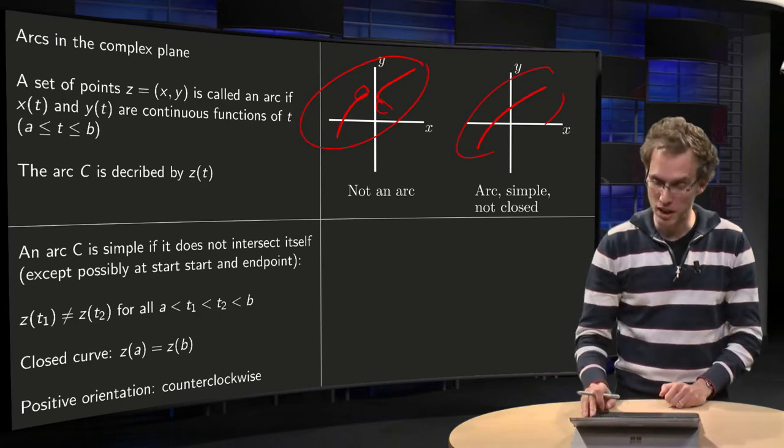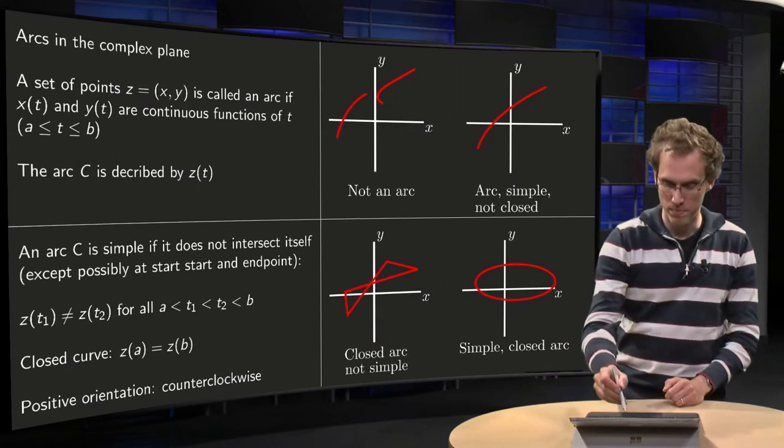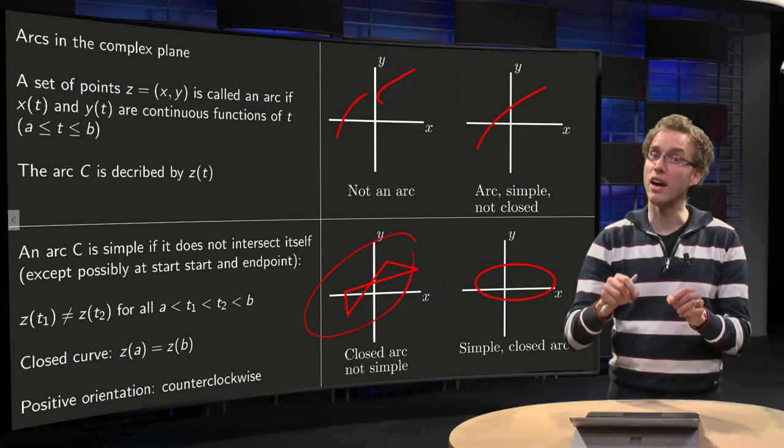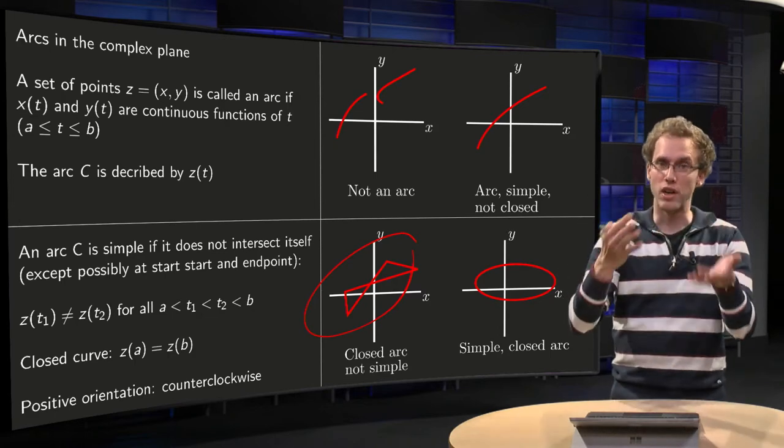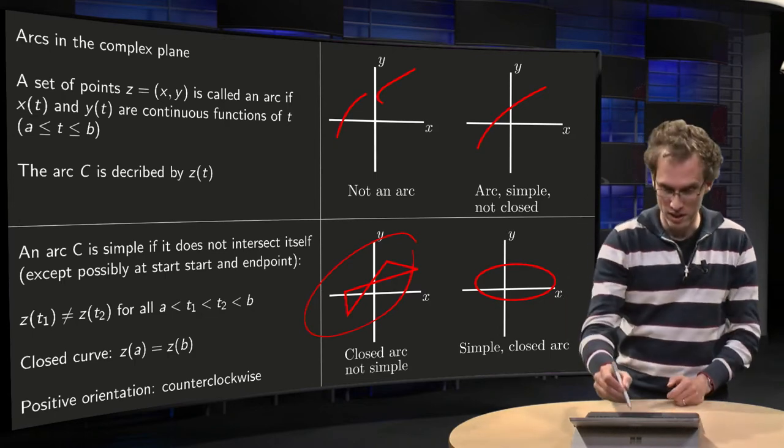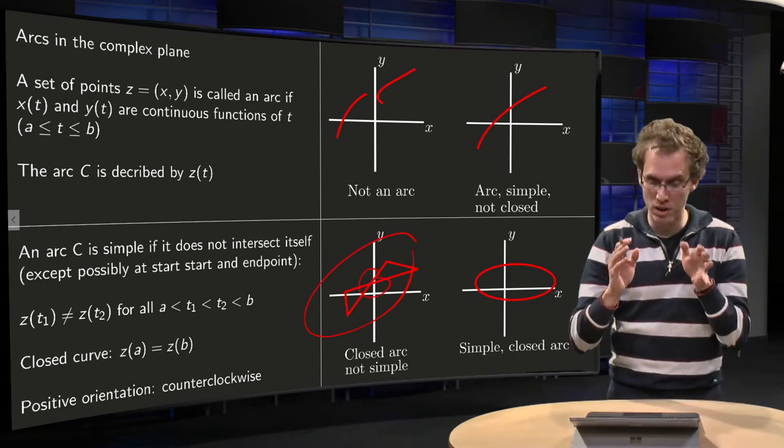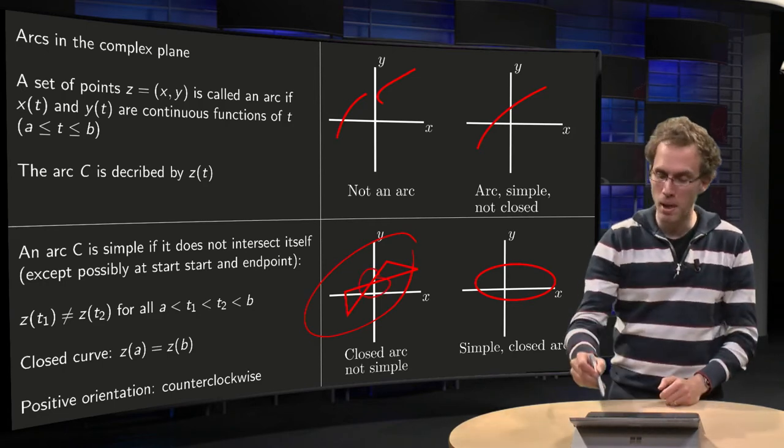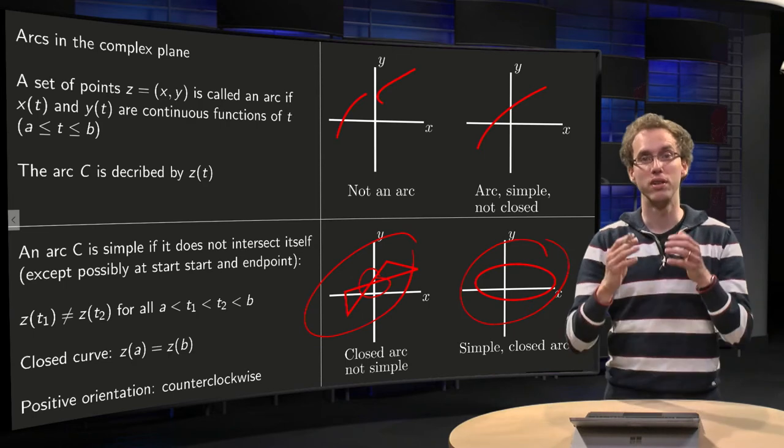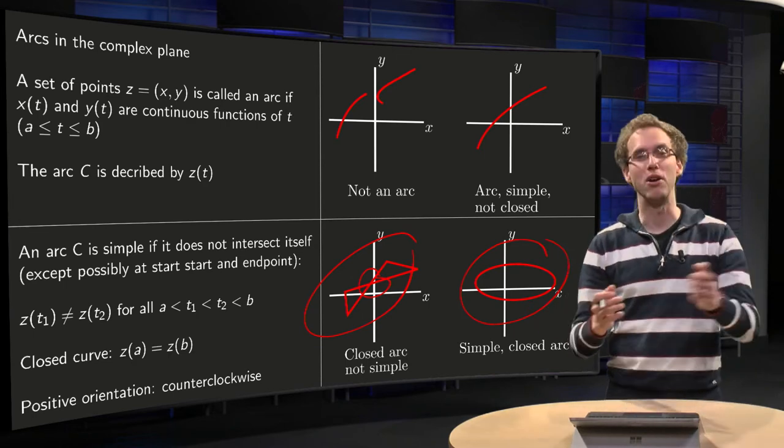The start and end point are not the same. Then over here the arc is closed, the start and end point are the same, but we are intersecting ourselves over here, so it is a closed arc but not a simple one. And finally here we have an example of an arc which is both simple and closed.